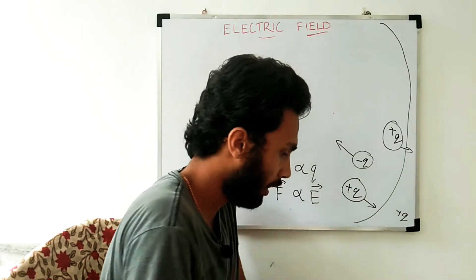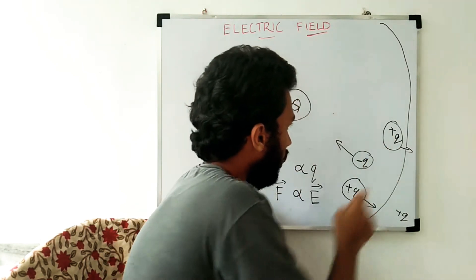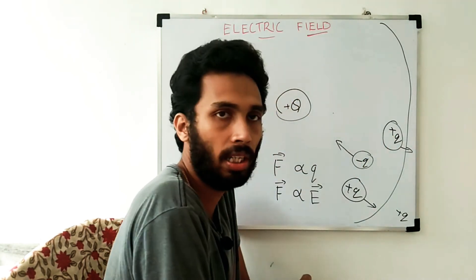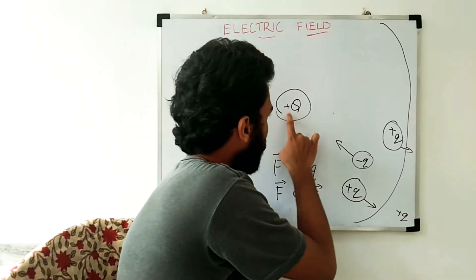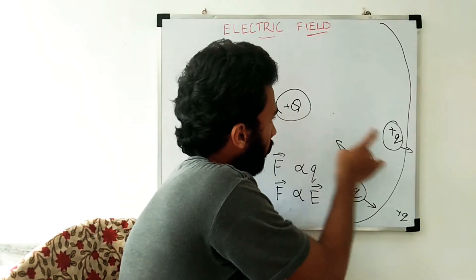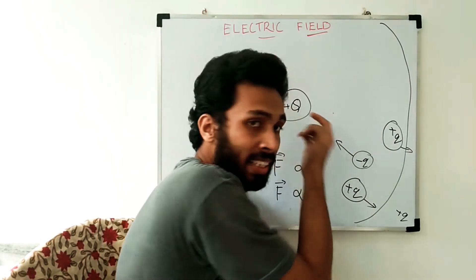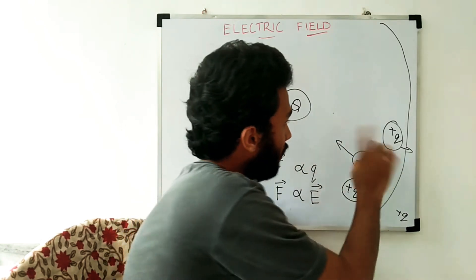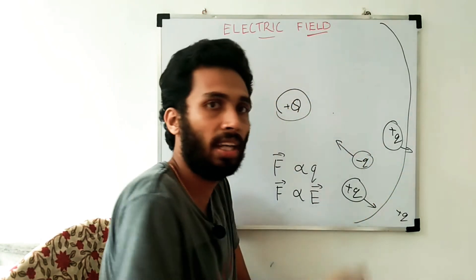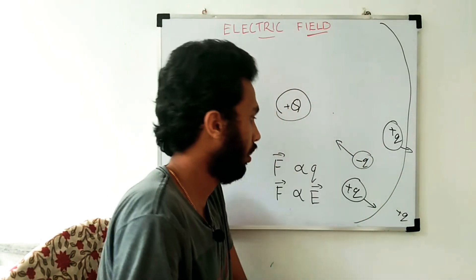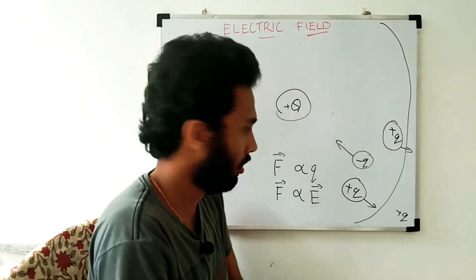The electric field is directly proportional. Because of this, the electric field is directly proportional. Now, if you add this charge, you can add this electric field. If you add this charge, you can add this electric field. So F is directly proportional to the electric field.